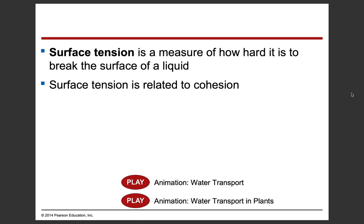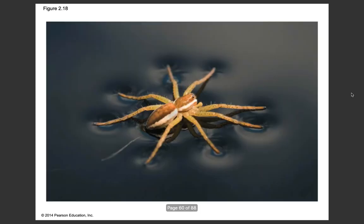Surface tension is a measure of how hard it is to break the surface of a liquid, and water has very high surface tension. Surface tension is related to cohesion — water sticking to itself due to hydrogen bonds. You can see this with a spider standing on water or those little skater bugs on lakes. If their mass is spread out, they don't break the surface tension and can sit on top of the water.